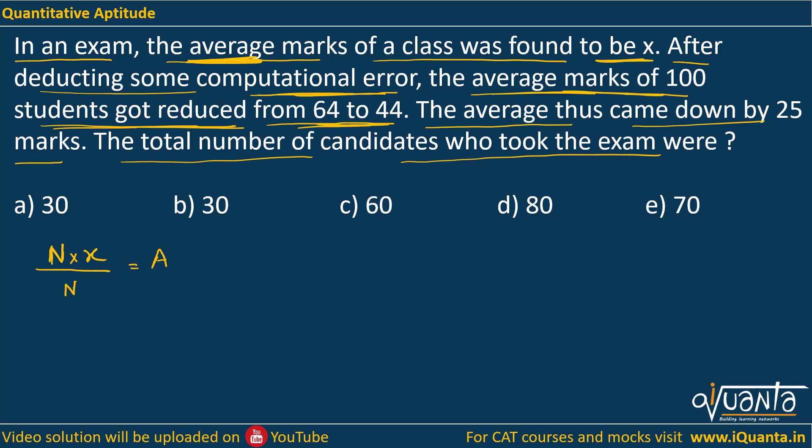Average marks of 100 students got reduced from 64 to 44, that means this is a reduction of 20 marks per student. So the total reduction will be 100 into 20, and this reduction is from total marks.